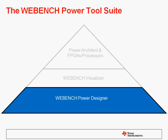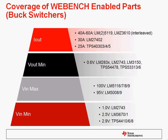The WebBench power tool suite really consists of three major areas in a pyramid. The bottom-most layer, which I'm going to discuss right now, is the WebBench Power Designer, which is targeted towards designing single power supplies. WebBench consists of a wide coverage of parts — current can go all the way up to the 40 to 60 amp range using some parts in interleaved mode. The minimum Vout can go all the way down to 0.6 volts, maximum Vin is up to 100 volts, and minimum Vin can go down to 1 volt. Topologies that are supported include buck, boost, flyback, SEPIC, inverting buck-boost, and we also have LDOs in the tool for low current applications.